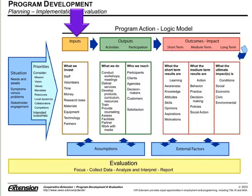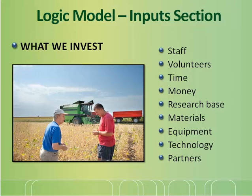The next section of the logic model is detailing the program investments that will be made, or the program inputs. For the input section, list those things that were invested in the program — things like staff and volunteers, time and money, your research-based information that you're going to provide, materials, equipment, technology, and partners.